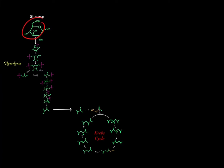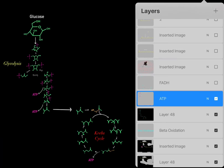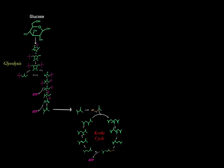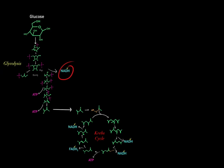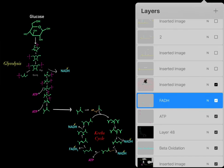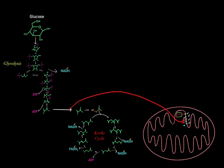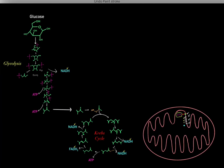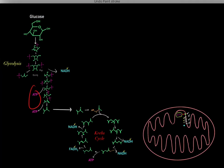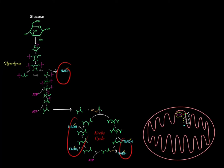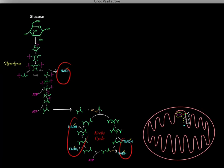Why do we take glucose molecules through central metabolism? When we go through central metabolism, we produce ATP molecules, which fuel all the energetic processes the cell needs for life. We also produce reduced cofactors, and those reduced cofactors can fuel the electron transport chain to create even more ATP.